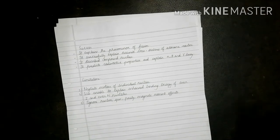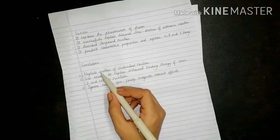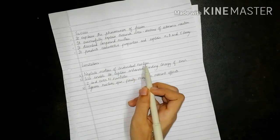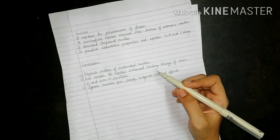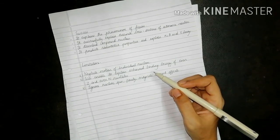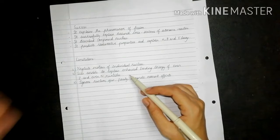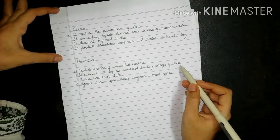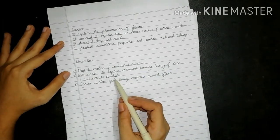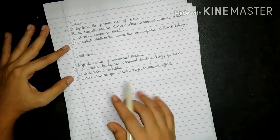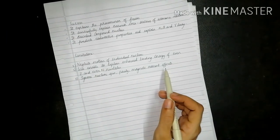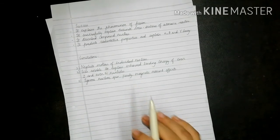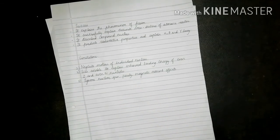Now the limitations: it neglected the motions of individual nucleons, since the model focused on the nucleus as a whole. The second limitation was it was unable to explain the enhanced binding energy of even Z and even N nuclides, known as the magic number effect. Third, it ignores nuclear spin, parity, and magnetic moment effects.